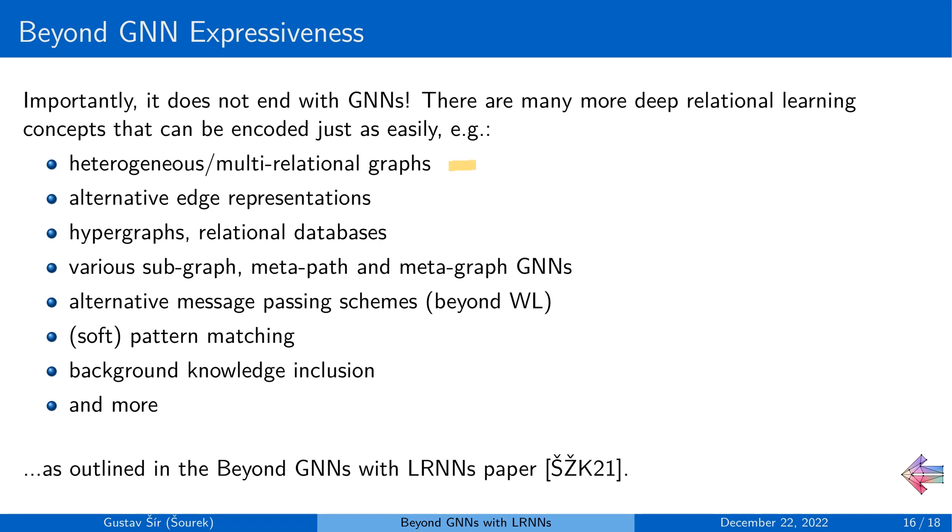This means that nothing stops you from playing with what we like to call deep relational learning ideas, such as playing with various heterogeneous or multi-relational graphs, alternative representation of what the edge concept means, playing directly with hypergraphs and relational databases. Actually, you can run GNN-like models directly in database engines with this framework, play with various subgraph, metapath, and metagraph GNNs that have recently been explored by various researchers, define completely new message passing schemes beyond the standard Weisfeiler-Lehman, incorporate differentiable pattern matching, background domain knowledge if we have some, and so on.